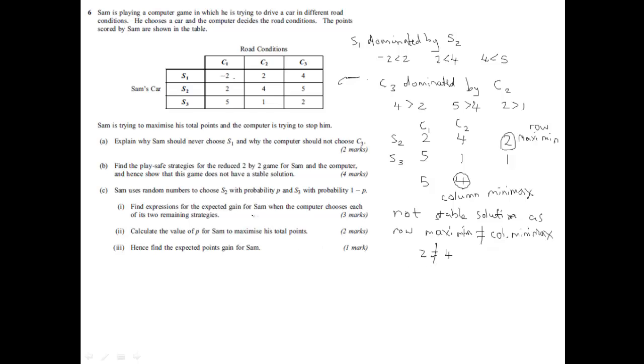So 6 marks in the bag. Right. Part C. Sam uses random numbers to choose S2 with the probability of P and S3 with the probability of 1 minus P. So, in other words, the probability of S2 is P here and 1 minus P for S3. It then says, find expressions for the expected gain for Sam when the computer chooses each of its two remaining strategies.